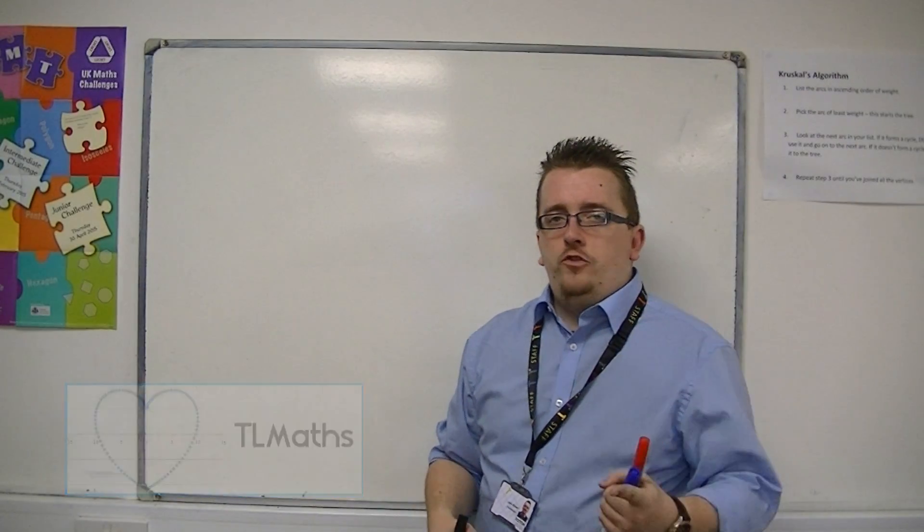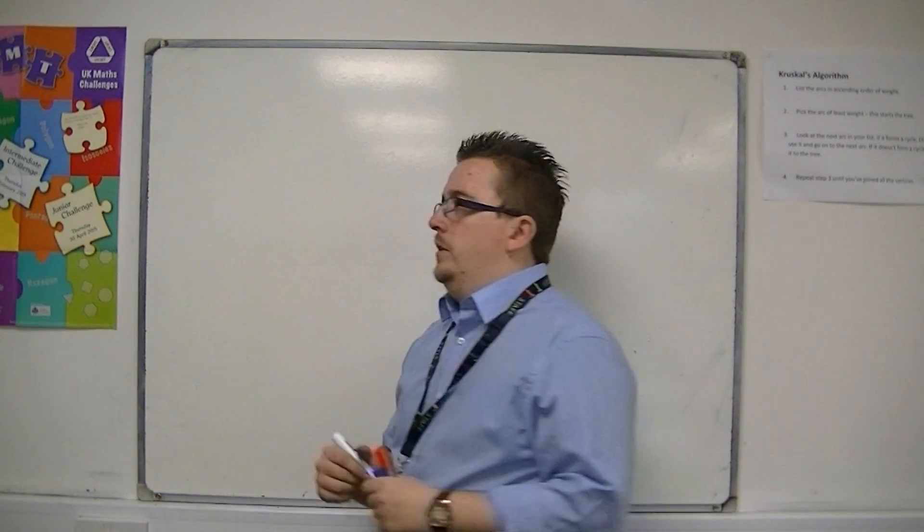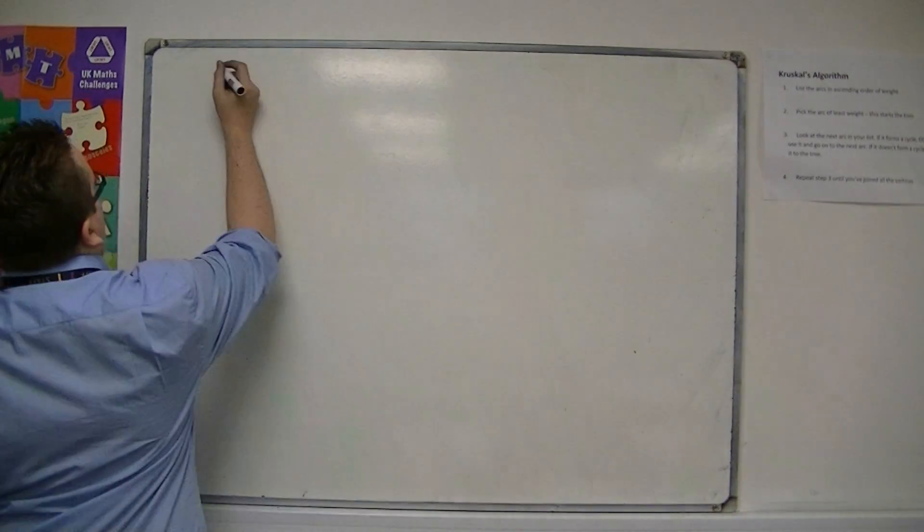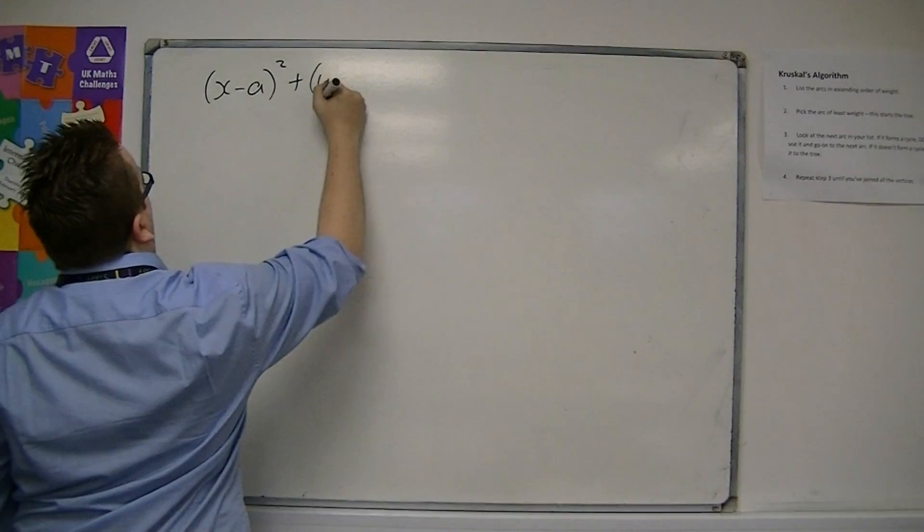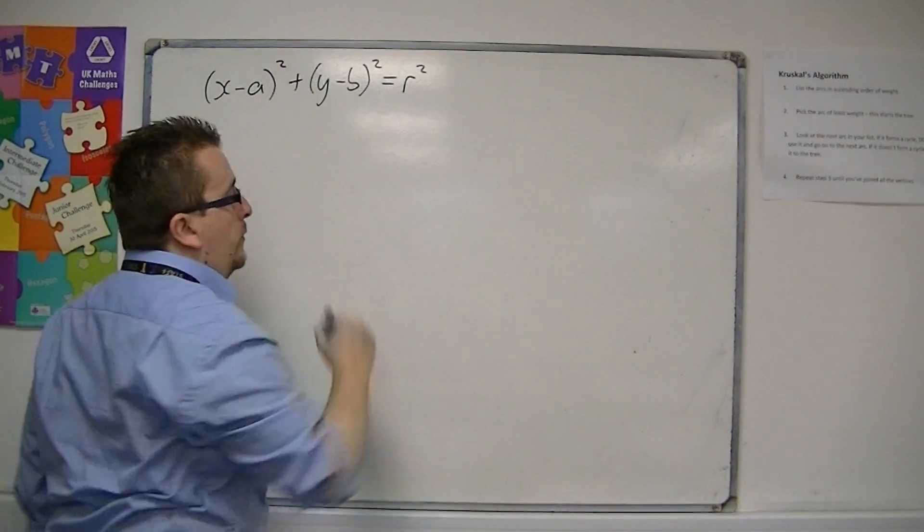In the previous video, I introduced the equation of a circle centered at (a, b) with radius r: (x - a)² + (y - b)² = r².